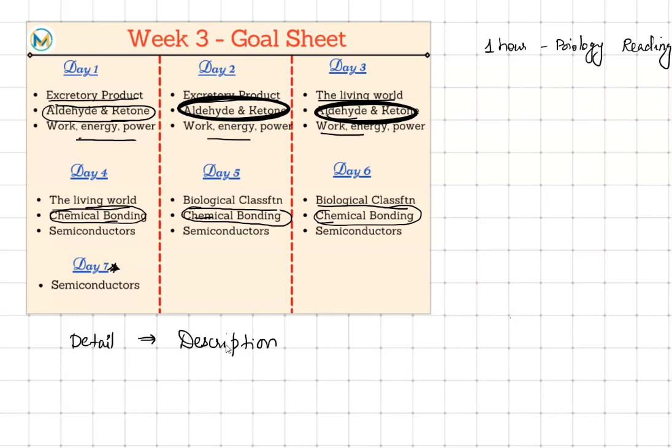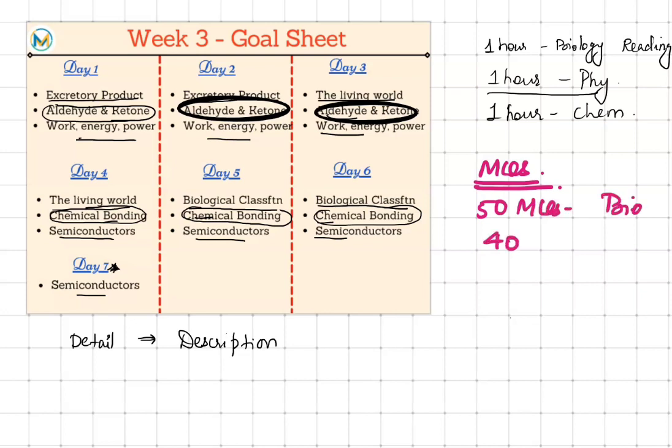Physics, we have divided the first three days for work, energy, power. It's a small chapter. First day kinetic energy, next day conservation of energy and potential energy. Four days we will need for semiconductors, it's a lengthy topic. The basic plan, one hour of the day for reading, remains the same. One hour for physics, one hour for chemistry, reading only the concepts allotted for that particular day.